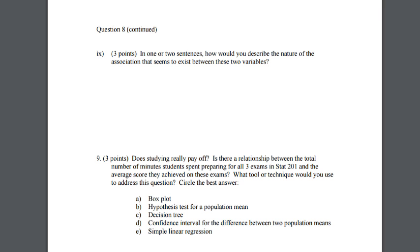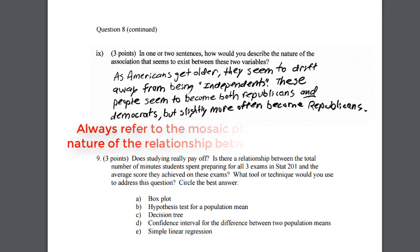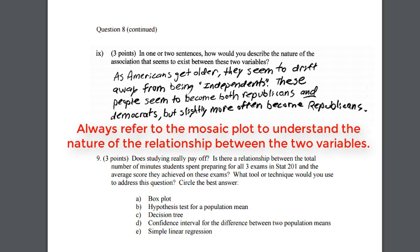So how would we describe the nature of the association that seems to exist with these variables? When we look at people who are older compared to younger people, the older people have a smaller percentage of independence. So the age groups that are older are less likely to be independent. And that sums it all up.